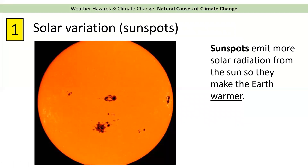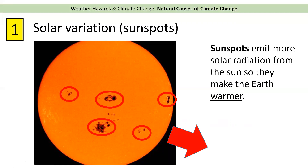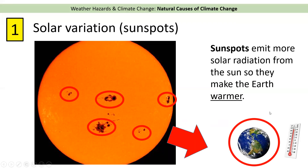The first natural cause is called solar variation — how much radiation and heat has been emitted from the sun. We often talk about black spots on the sun called sunspots. When there are more sunspots, it means there's more radiation being given off from the sun, and therefore more heat coming towards Earth, making the Earth much warmer. So sunspots emit more solar radiation and therefore make the Earth warmer.